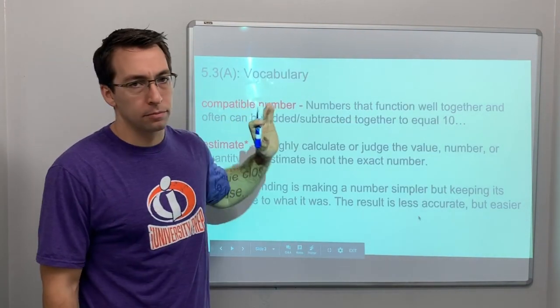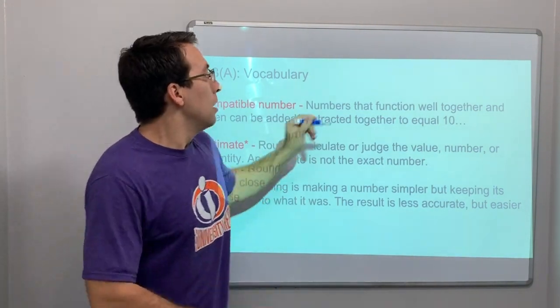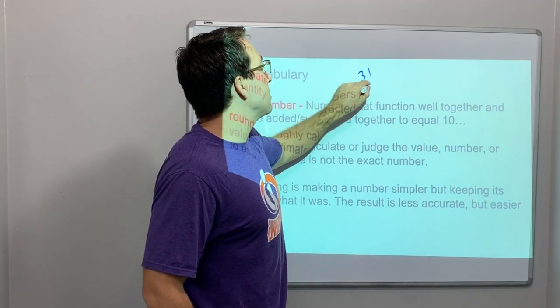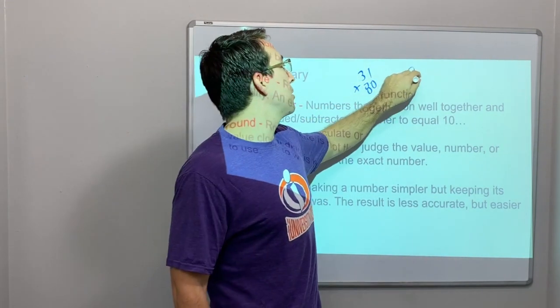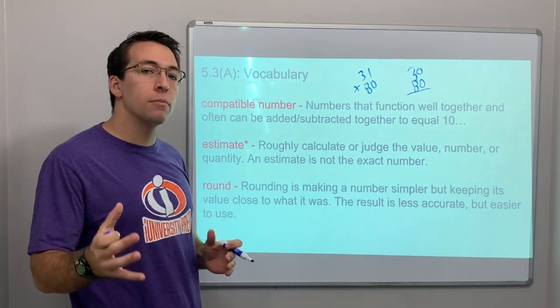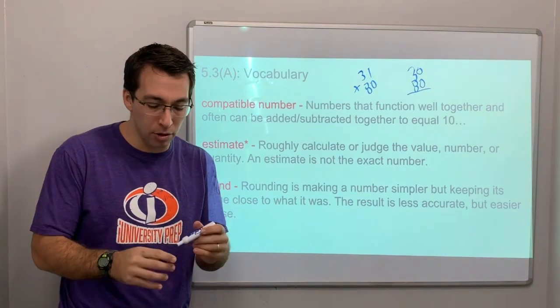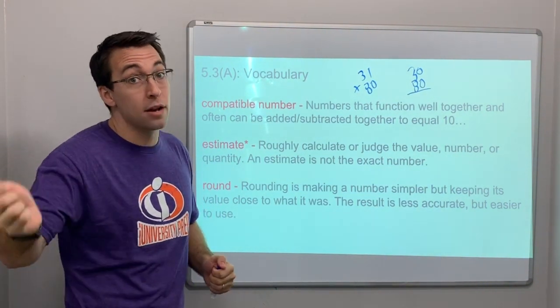Compatible numbers. Yes, the last video, we just had a problem. 31 times 80 is more difficult than if we just say 30 times 80. Compatible numbers are numbers that are just simpler to use together. 3 times 8 is a lot different than 31 times 8.